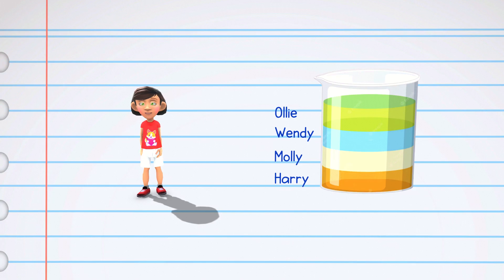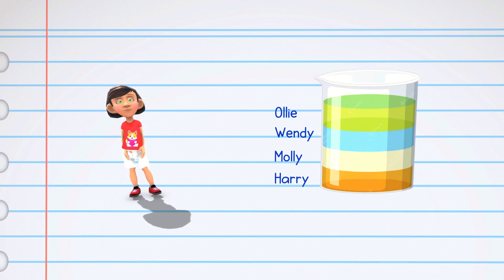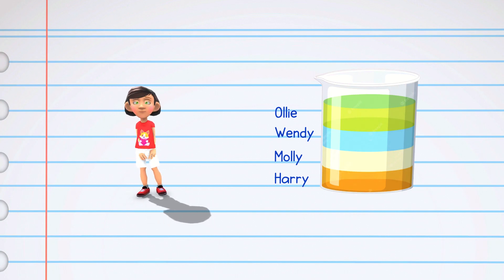Molly the milk is a bit heavier than Wendy the water. She goes right under Wendy, making her own layer. Molly likes to hang out with Wendy because they're kind of similar in their weights.